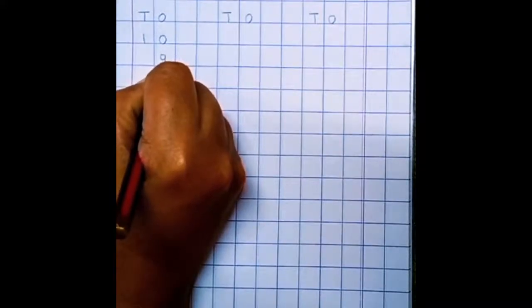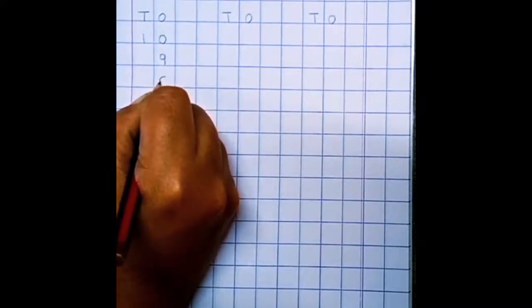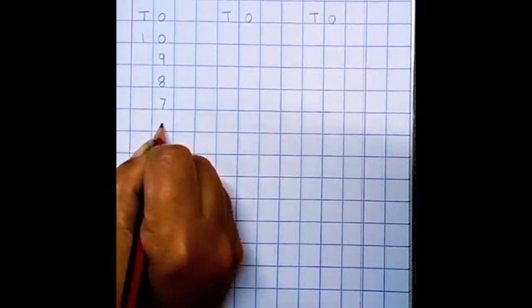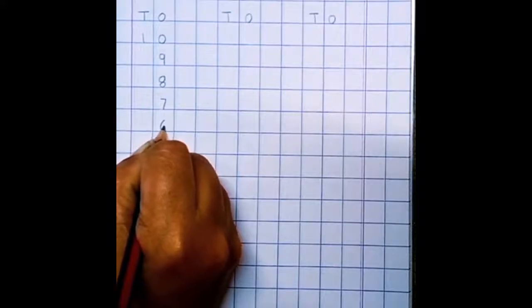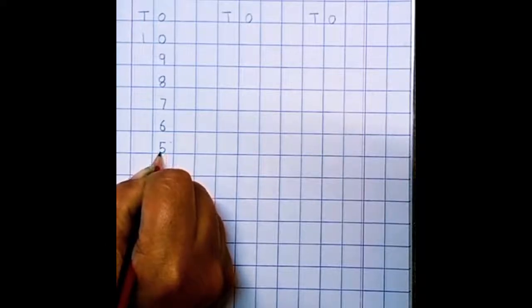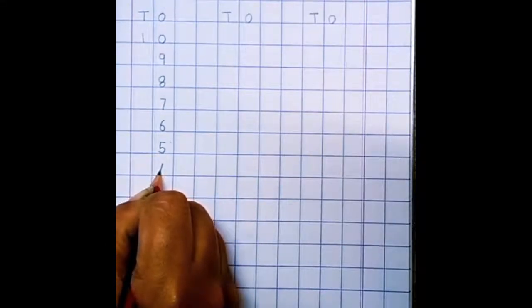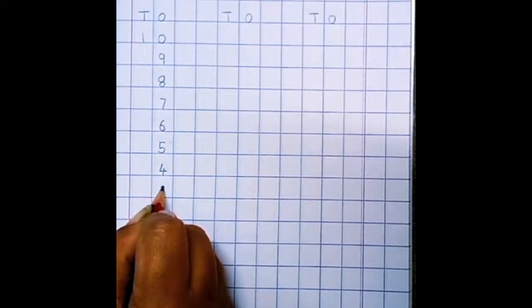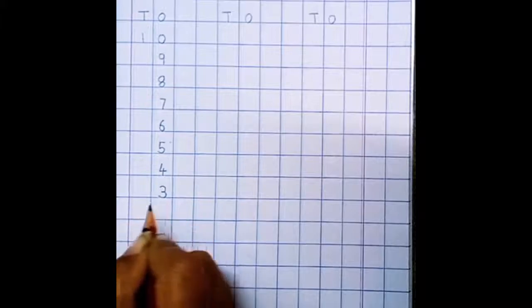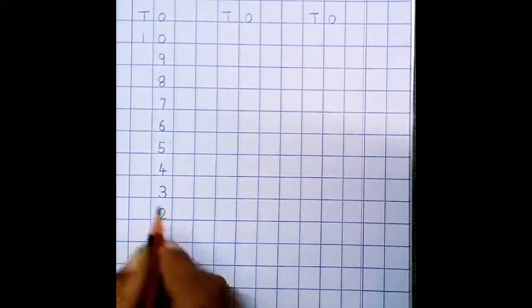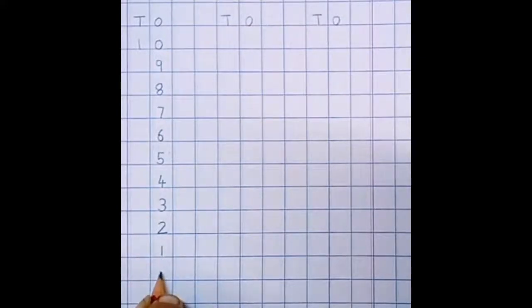Single digit number we have to write below O. 9, 8, 7, 6, 5, 4, 3, 2, 1, 0.